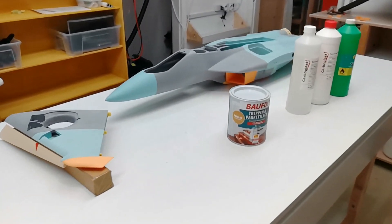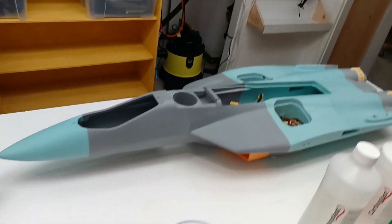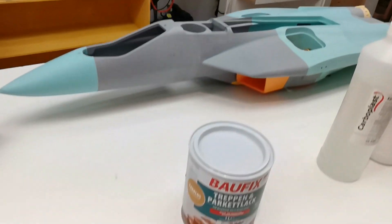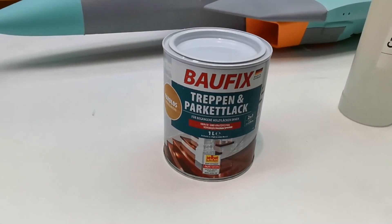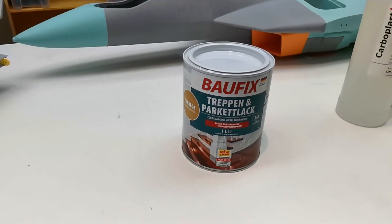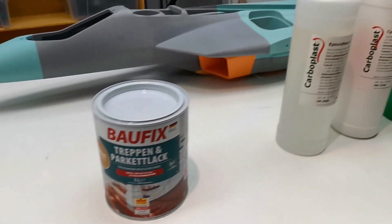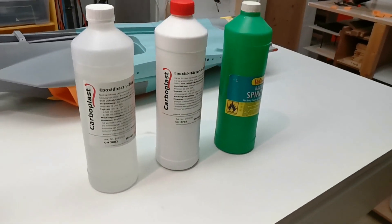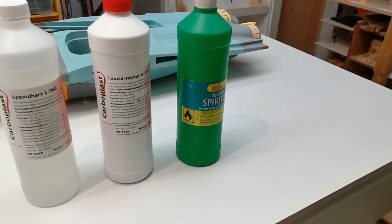Today I want to compare two ways of covering the surface of lightweight printed PLA parts. On the one hand we have this varnish, which is normally used for wood surfaces. And on the other hand, we have my well-known mixture of resin and spiritus.